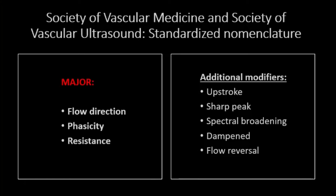The Societies of Vascular Medicine and Vascular Ultrasound have developed standardized nomenclature for use in describing peripheral arterial ultrasound patterns. The three fundamental major descriptors are flow direction, phasicity, and resistance. Qualifying modifiers are also useful and pertinent in determining the nature of arterial disease.